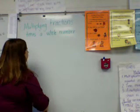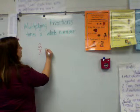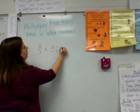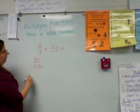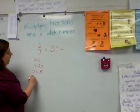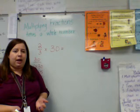The first problem I'm going to put on the board is 2 thirds times 30. So I'm wanting to find 2 thirds of a group of 30. Based on our first step, we're going to find the factors of 30. I know 1 times 30, 2 times 15, and 3 times 10 are factors of 30.